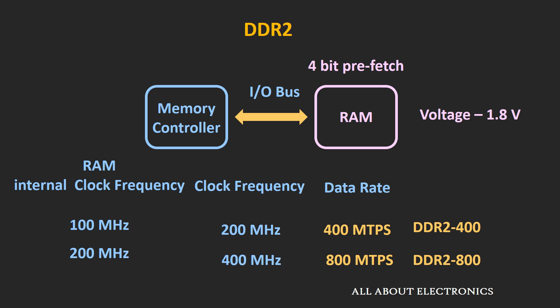The second generation is DDR2 RAM, which operates at 1.8V instead of 2.5V. The internal RAM clock frequency is similar to the previous generation, but the data rate is doubled by increasing the number of bits prefetched per cycle from 2 bits to 4 bits. In other words, the internal burst width is doubled — if the IO bus is 64 bits wide, the internal burst width becomes 128 bits.